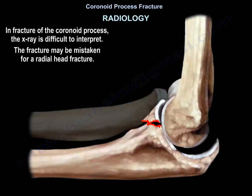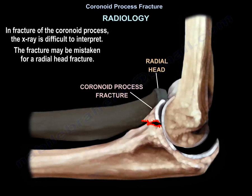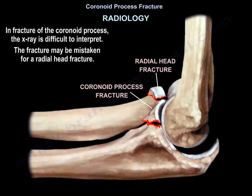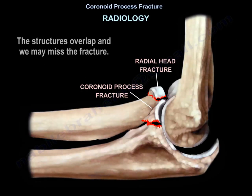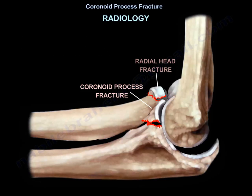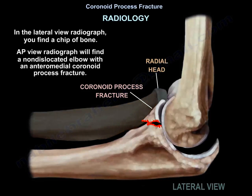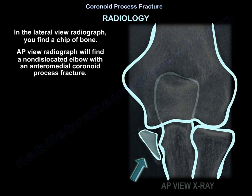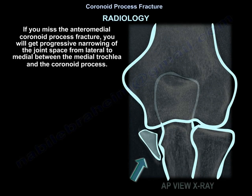Regarding radiology: in fractures of the coronoid process, the x-ray is difficult to interpret — the fracture may be mistaken for a radial head fracture as structures overlap, and the fracture may be missed. On the lateral view, you may find a small fleck of bone. On AP radiograph, you may find a non-dislocated elbow with an anterior medial coronoid fracture. If you miss it, you will get progressive narrowing of the joint space from lateral to medial, between the medial trochlea and the coronoid.